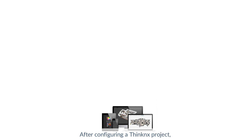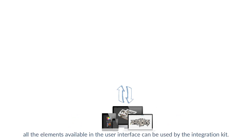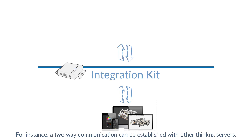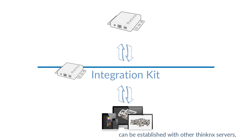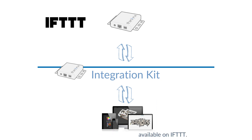After configuring a Thinconnex project, all the elements available in the user interface can be used by the integration kit. For instance, a two-way communication can be established with other Thinconnex servers, and a wide range of services available on IFTTT.